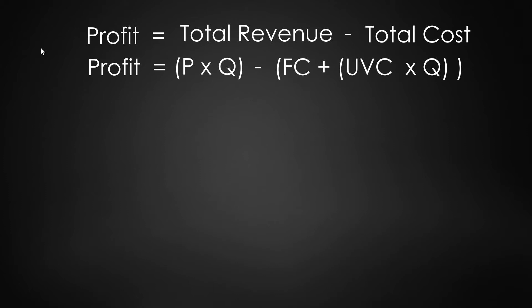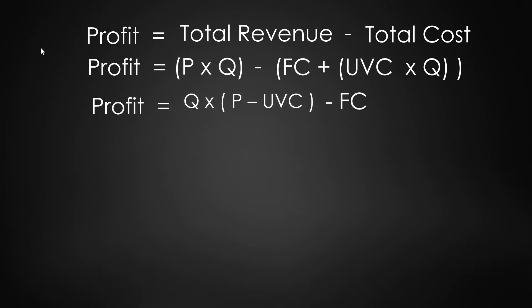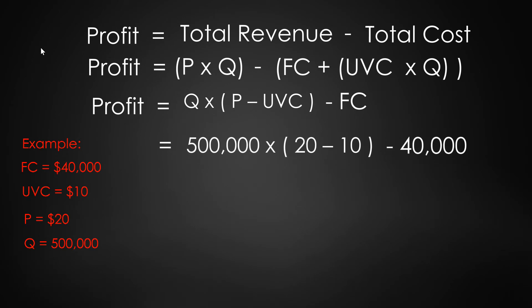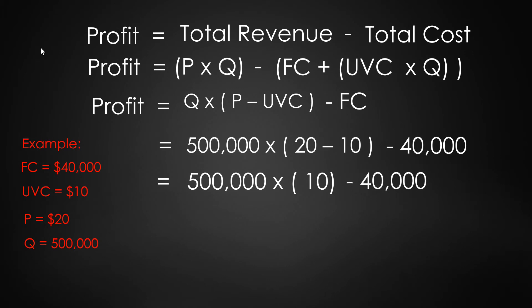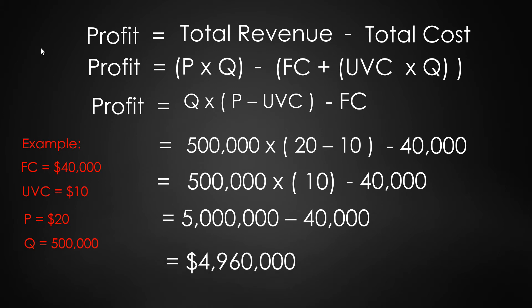One more variation: profit equals Q times (P minus UVC) minus fixed cost. With our example, profit equals 500,000 times ($20 minus $10) minus $40,000. That gives us 500,000 times 10, minus 40,000 — so $5,000,000 minus $40,000 equals $4,960,000, the same answer as before.